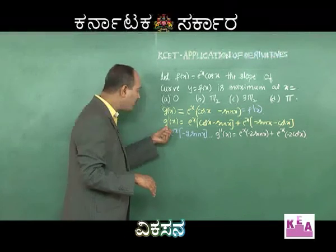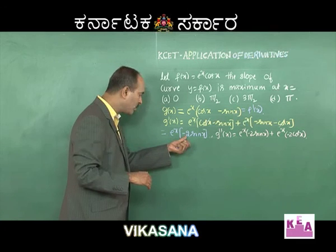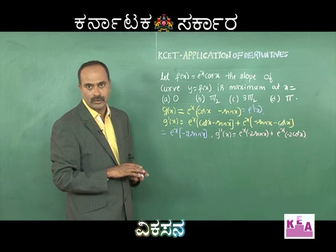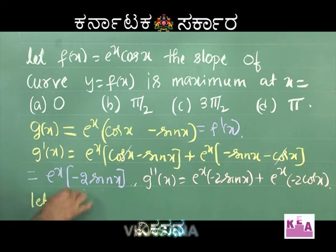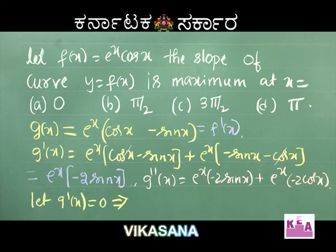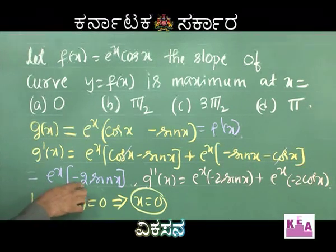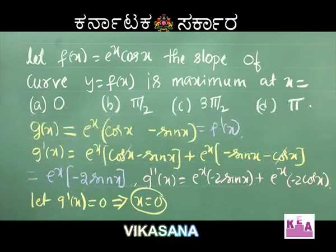If g'(x) is equated to 0, we get eˣ(−2 sin x) = 0. Setting g'(x) = 0 clearly implies x = 0, because −2 sin x = 0 means x = 0.